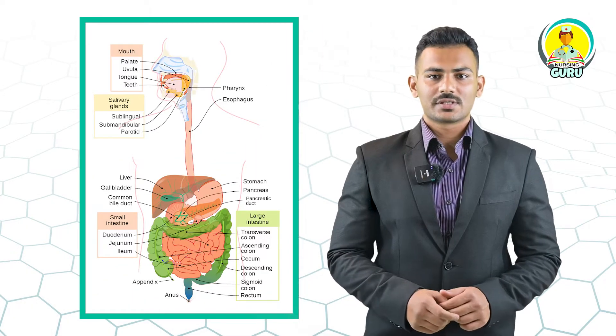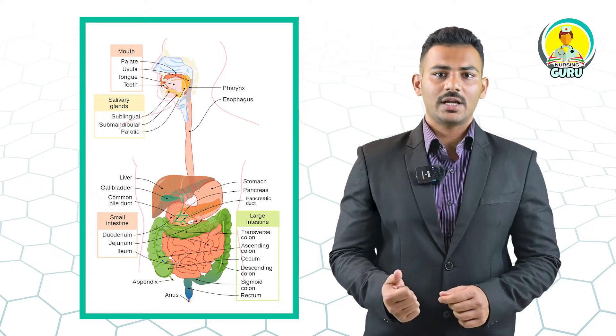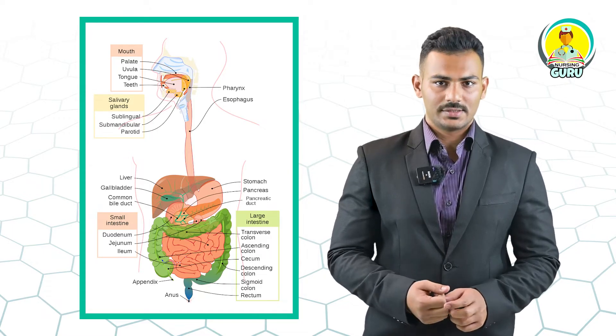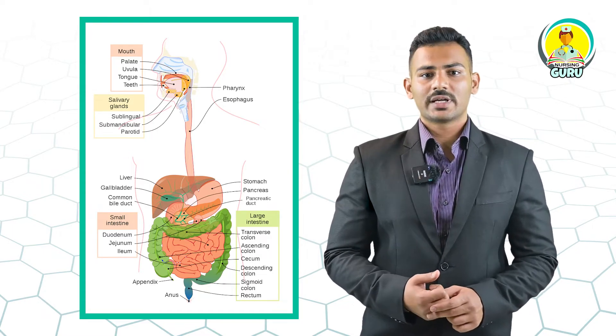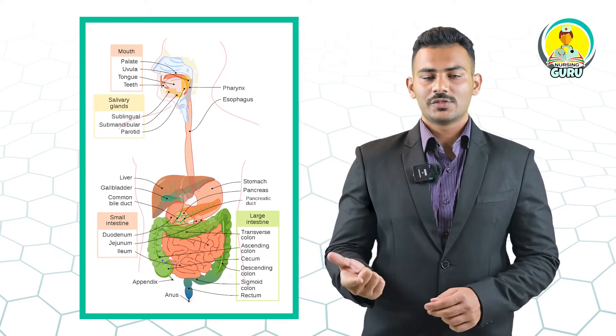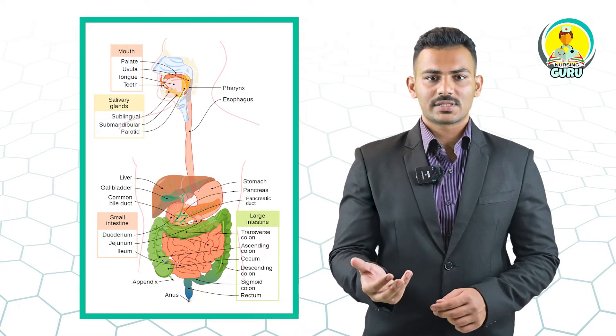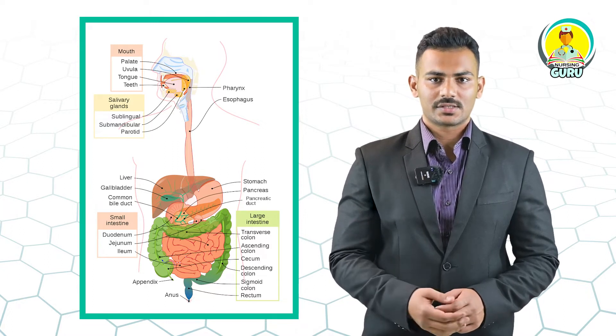The human digestive system consists of the elementary canal and associated glands. The elementary canal consists of the mouth, oesophagus, stomach, small intestine, and large intestine.